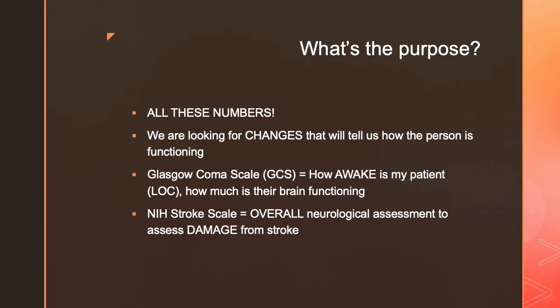The NIH Stroke Scale is also a neurological assessment, but it's more assessing damage — it's looking for deficits specifically after a stroke. While the Glasgow Coma Scale is for any patient, whether they have a problem or not, the Stroke Scale is really looking at patients that have had strokes — whether they're getting better or worse, or what their baseline functioning is.